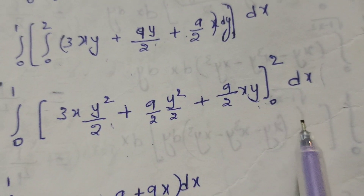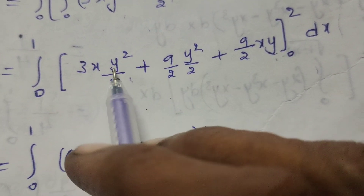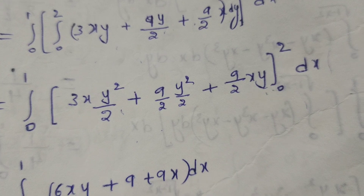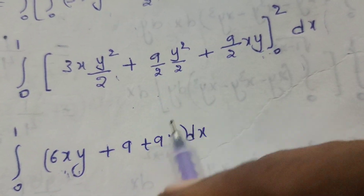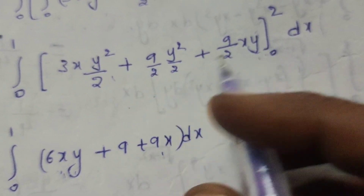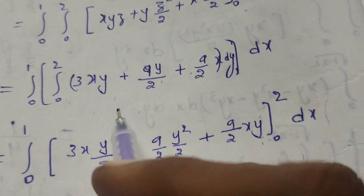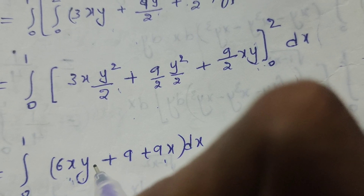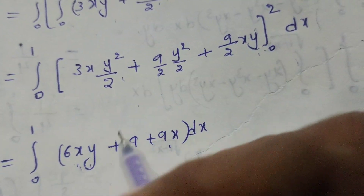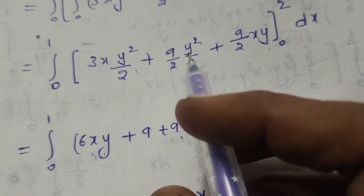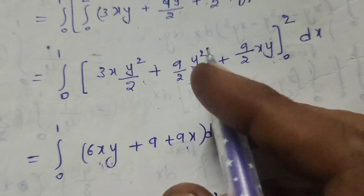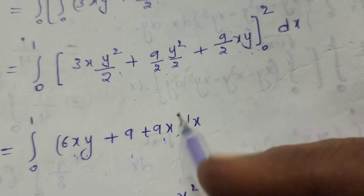Integrating with respect to y: 3x·(y²/2) + (9/2)·(y²/2) + (9/2)·x·y, then substituting the y limits 0 to 2. Substituting upper limit y = 2: 2² = 4. We get 3x·(4/2) = 6x, then 9·(4/4) = 9, and 9x. So the expression becomes 6x + 9 + 9x, which simplifies accordingly.